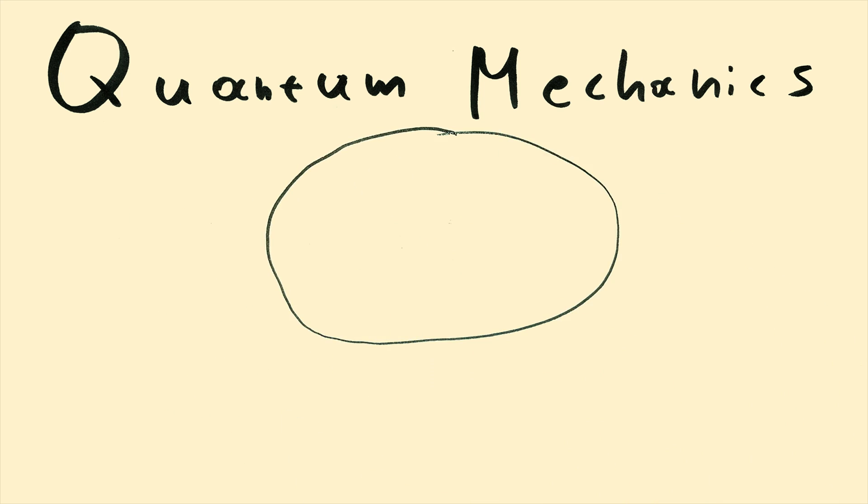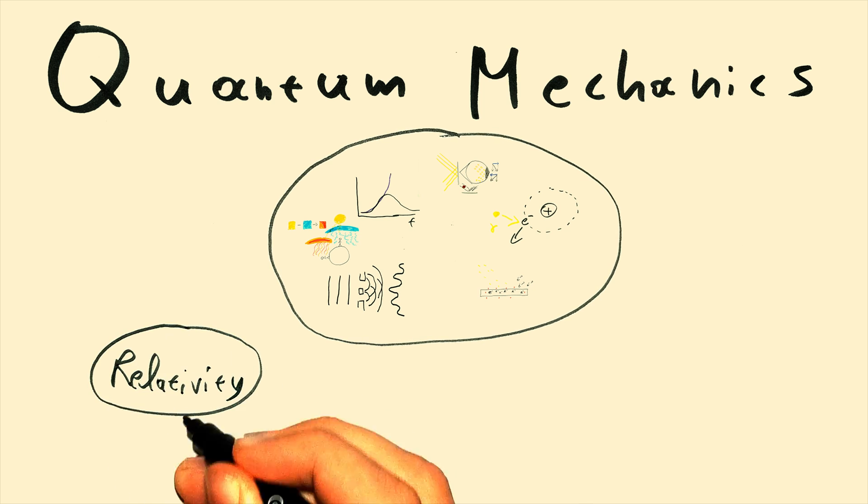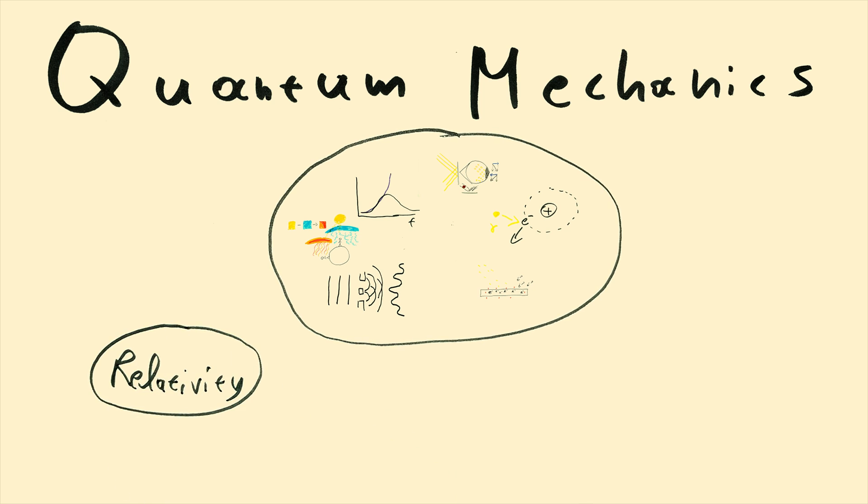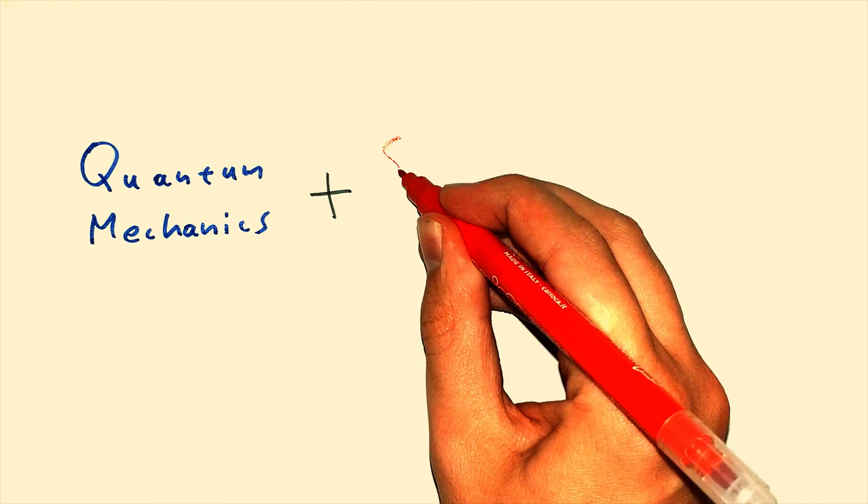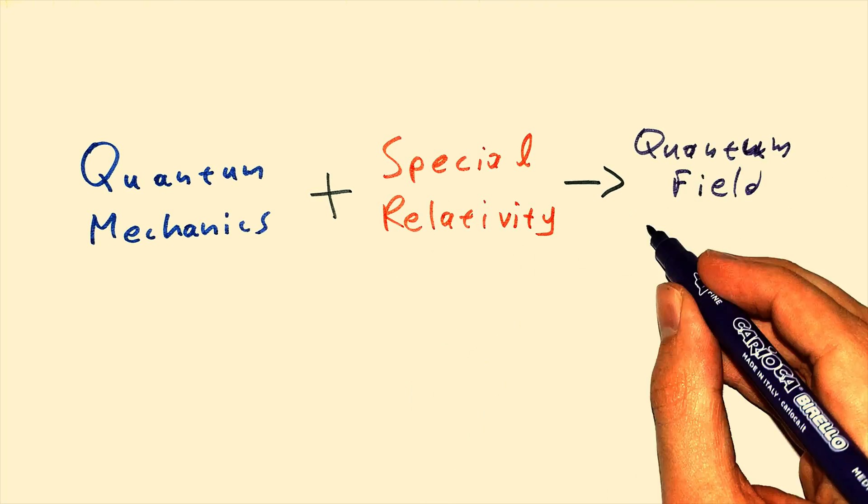Quantum mechanics did fix many of our problems which were present, but there was one big problem. They did not take into account Einstein's relativity. So we tried fixing that problem and we partly succeeded. We managed to merge quantum mechanics with special relativity and that's what we call quantum field theory.